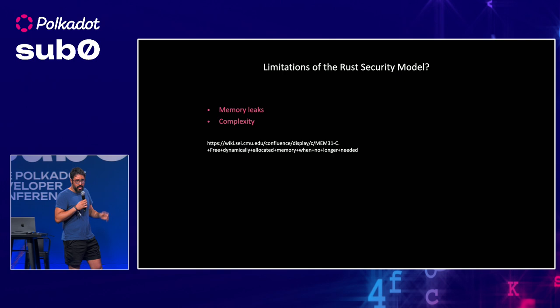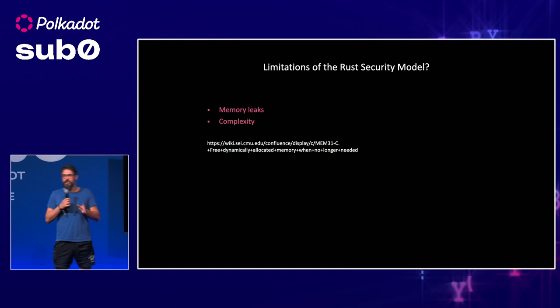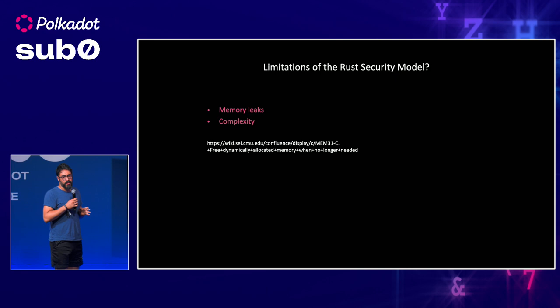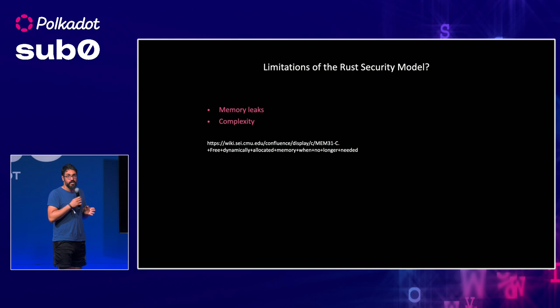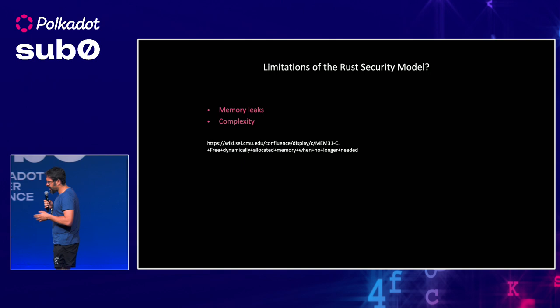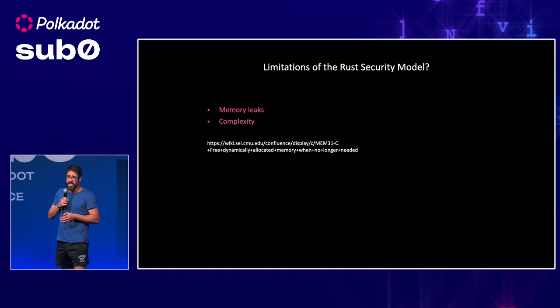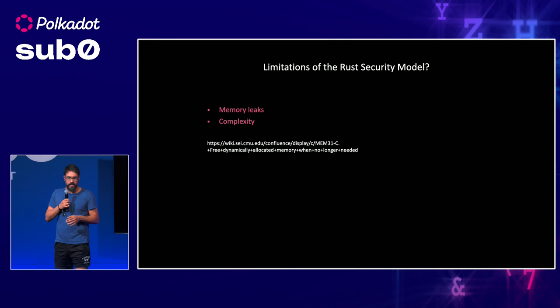There are some limitations to the Rust security model. One is memory leaks. Essentially the borrow checker and the core security model in Rust doesn't really care about memory leaks. From the Rust perspective, the concern is undefined, unpredicted behavior at runtime, and memory leaks mostly don't lead to that issue. However, from a security standpoint, memory leaks can cause a lot of problems — wasted memory that brings down performance, and in some cases it may expose sensitive information, credentials, private keys, and things like that.